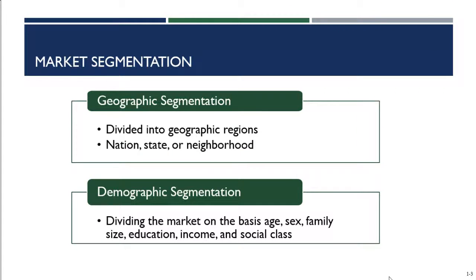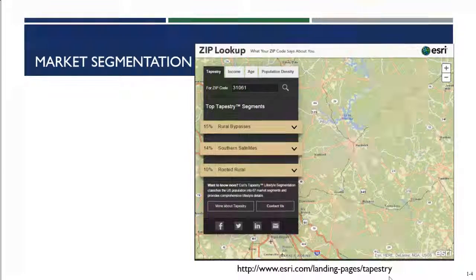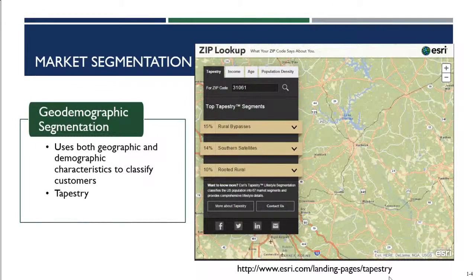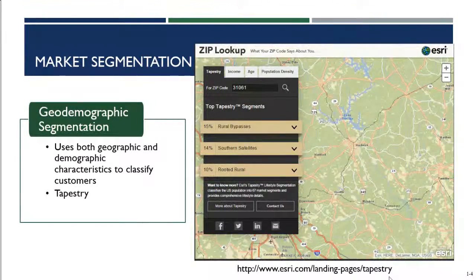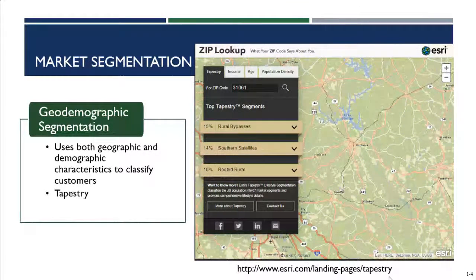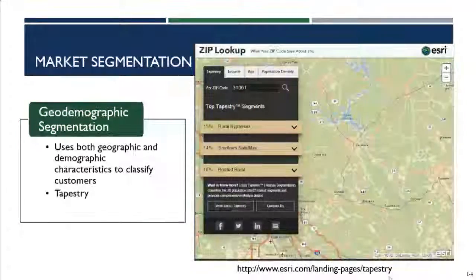We can combine geographic and demographic segmentation into what we call geodemographic segmentation. This uses both geographic and demographic characteristics to classify customers. It's appealing for managing the store channel because customers shop at stores near where they live, and retailers can change the assortment of stores based on the demographics of a specific area.